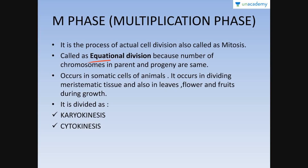This phase is called an equational division because the number of chromosomes in the parent and the number of chromosomes in the progeny are the same. You might ask that if a parent has 2N chromosomes then each daughter cell might have N chromosomes each, but that is not the case. If the parent has 2N, each daughter cell would also have 2N chromosomes.